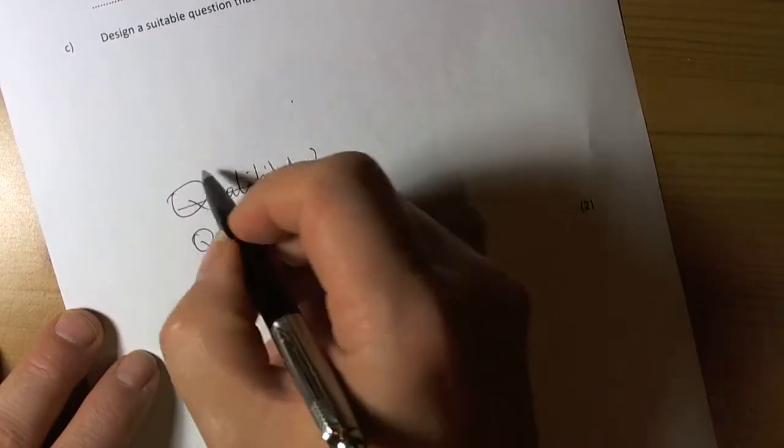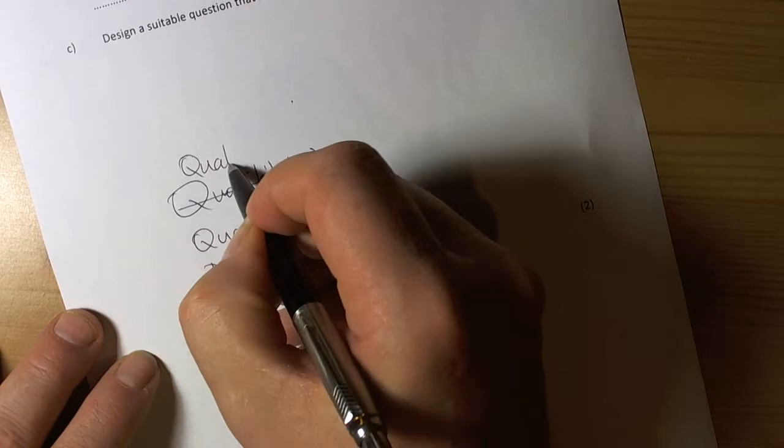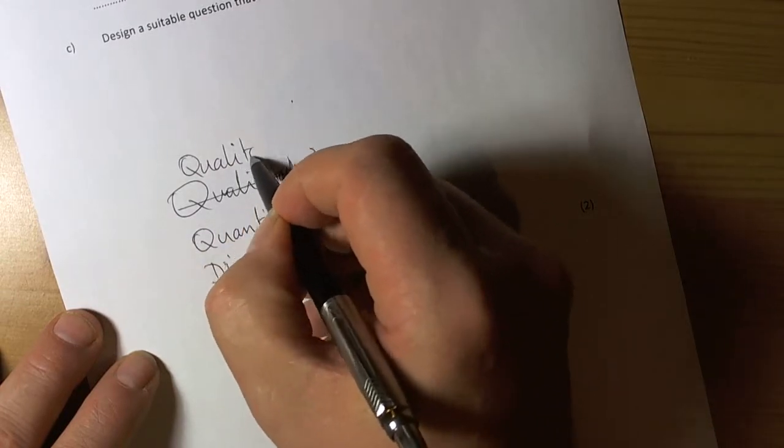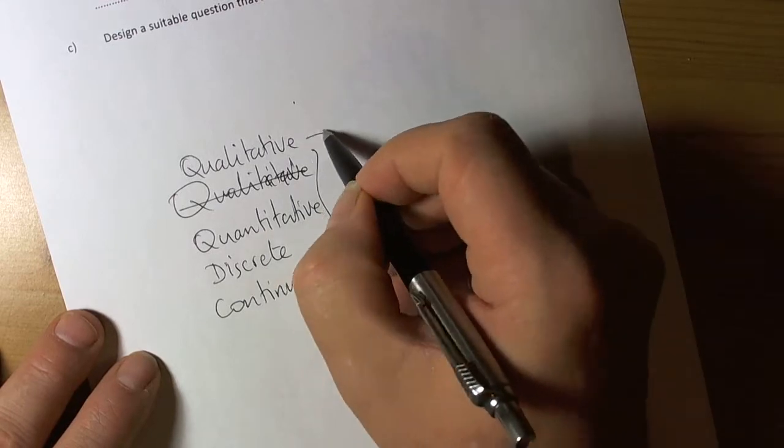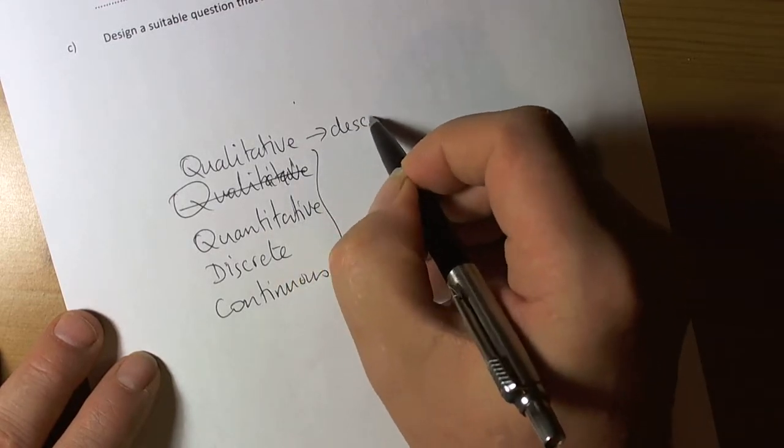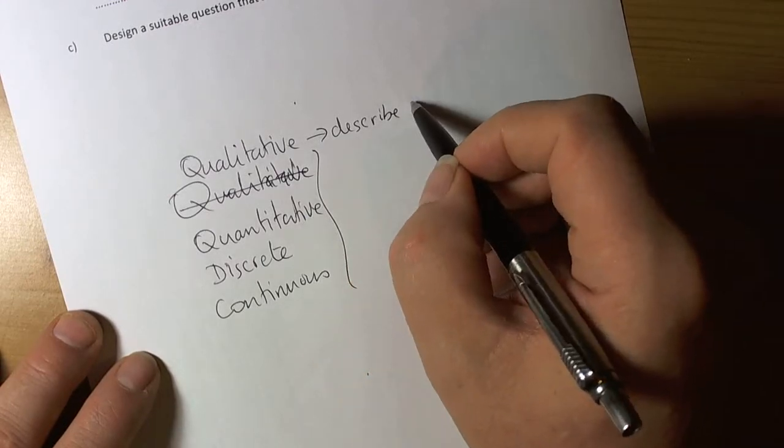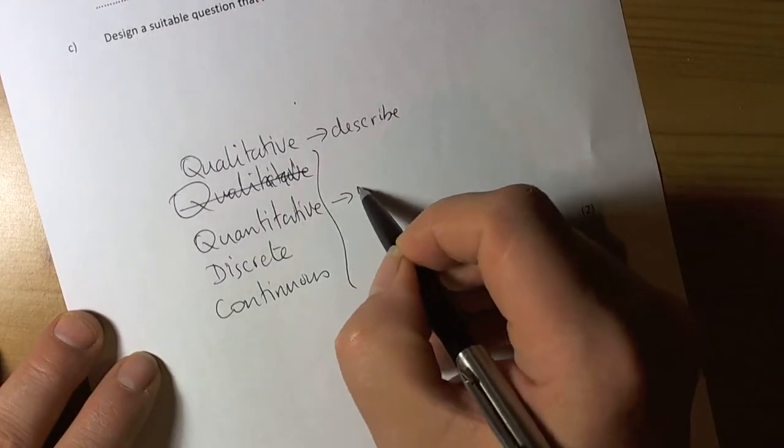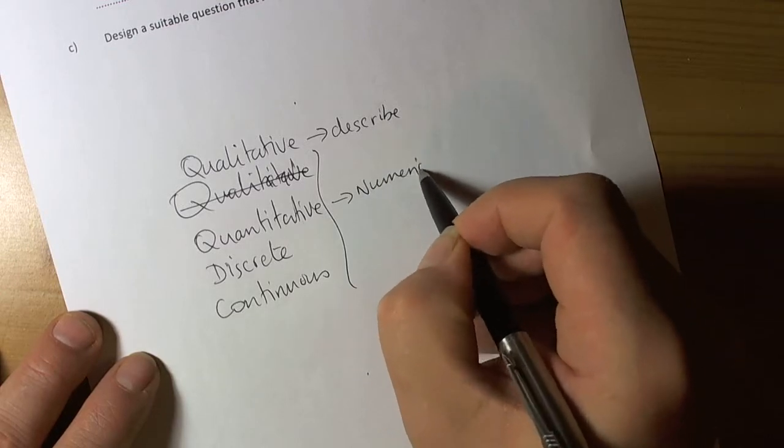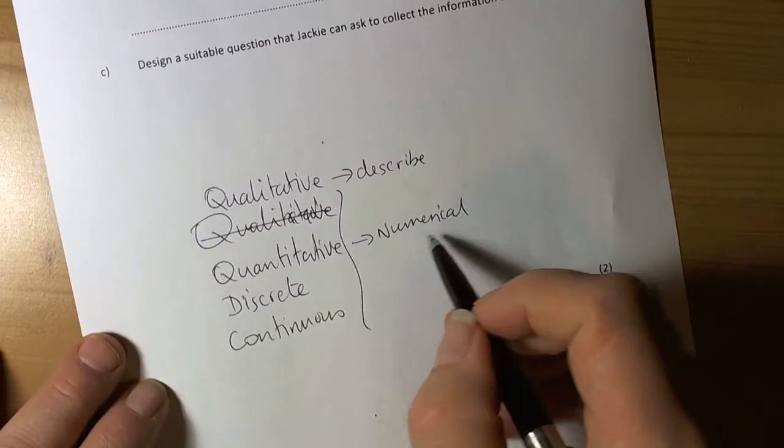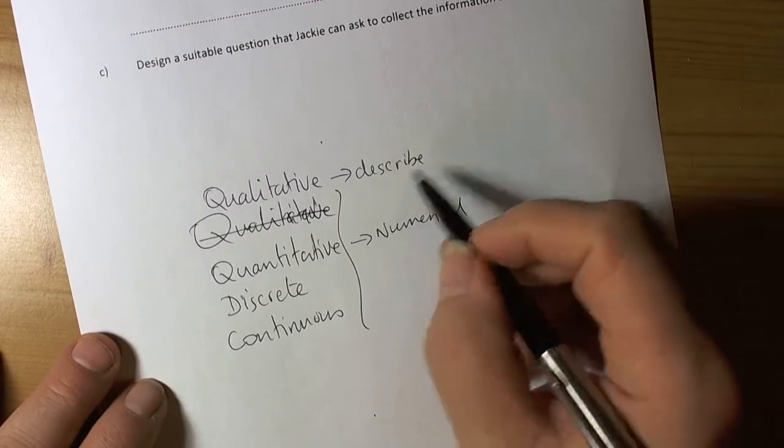Qualitative data types are descriptive - they describe something, it's got a quality. Quantitative is numerical. Basically any data type that's not numerical is describing something.